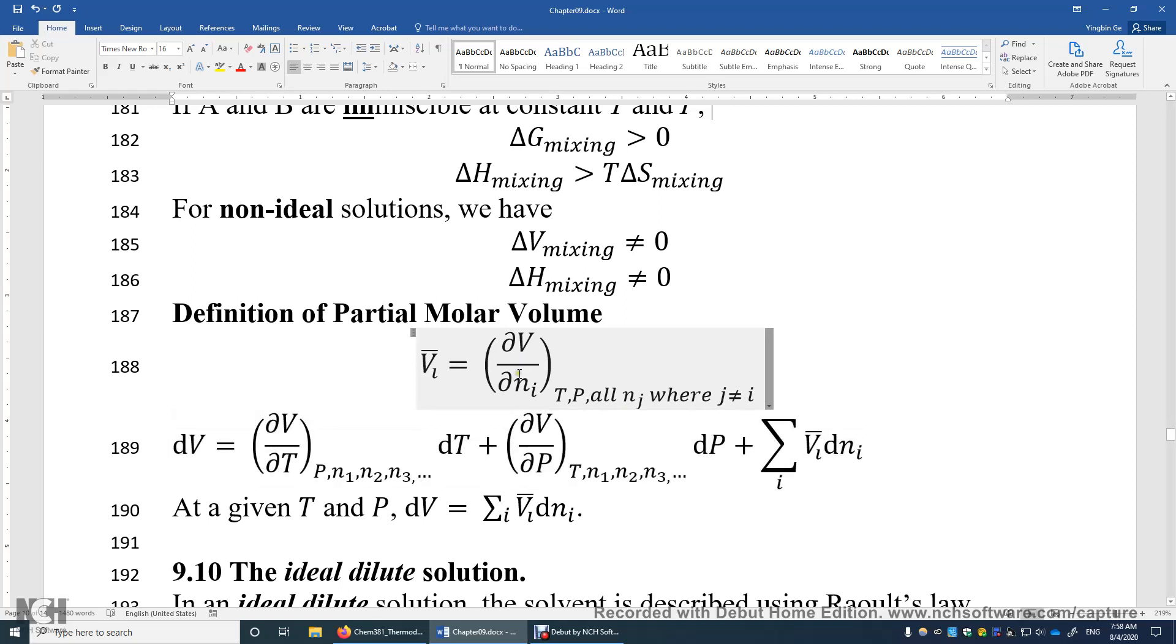So we'll have to resort to this concept. It's just delta V over delta N on the constant temperature and pressure condition. You have to hold the other variables constant.